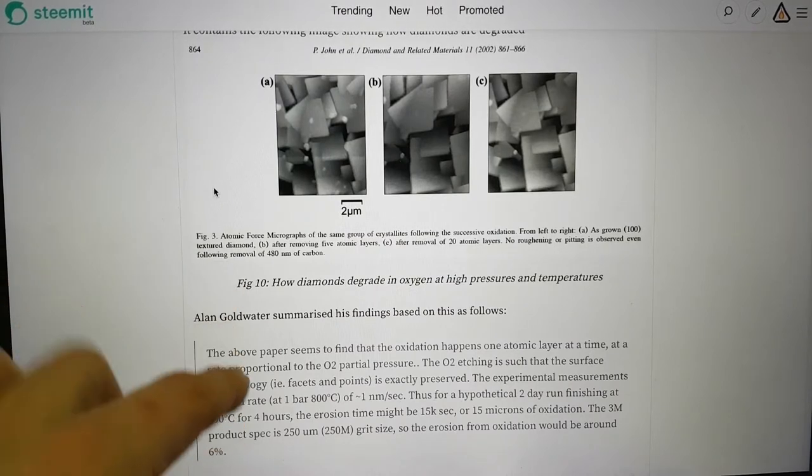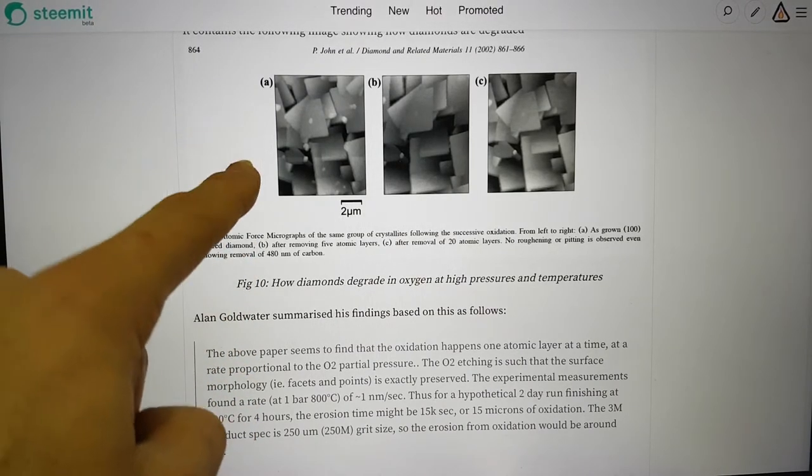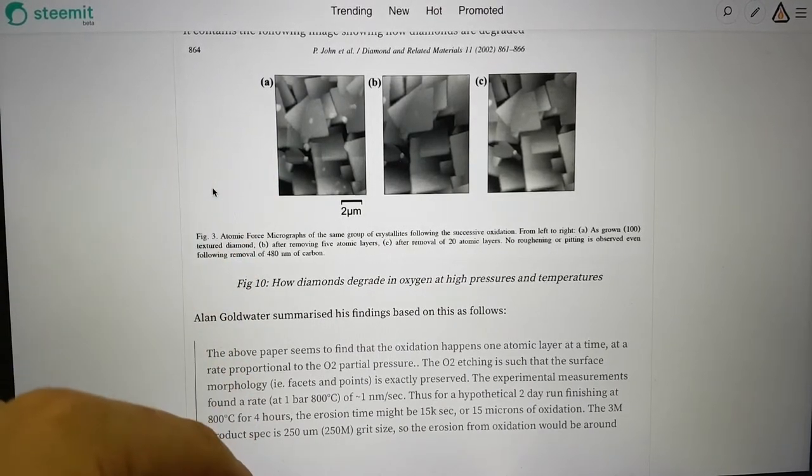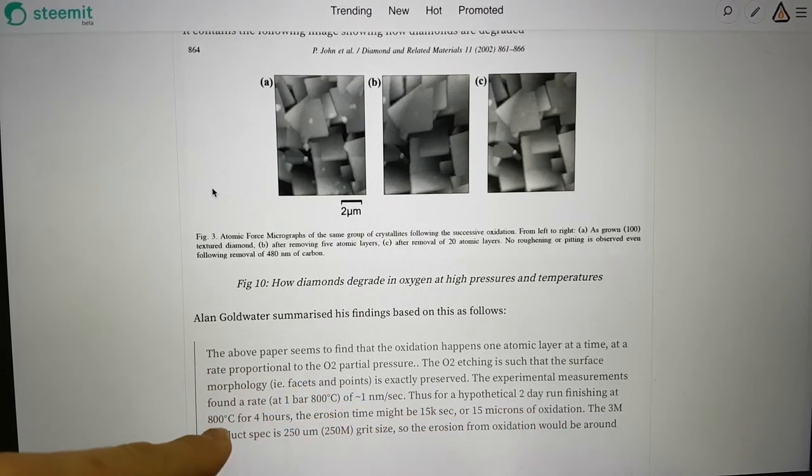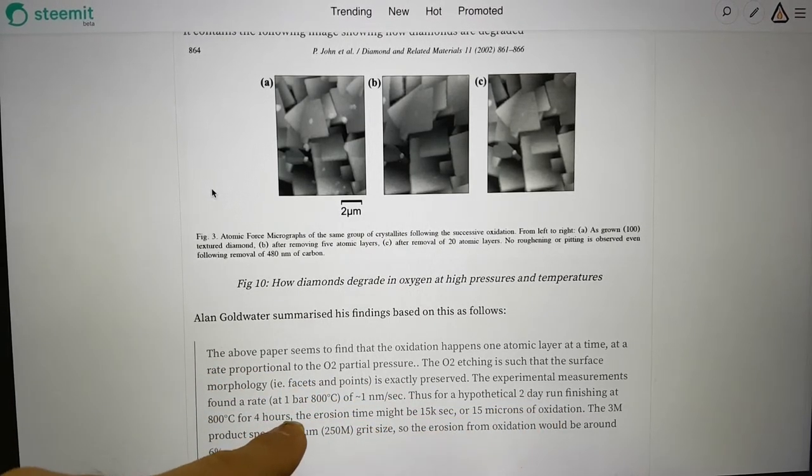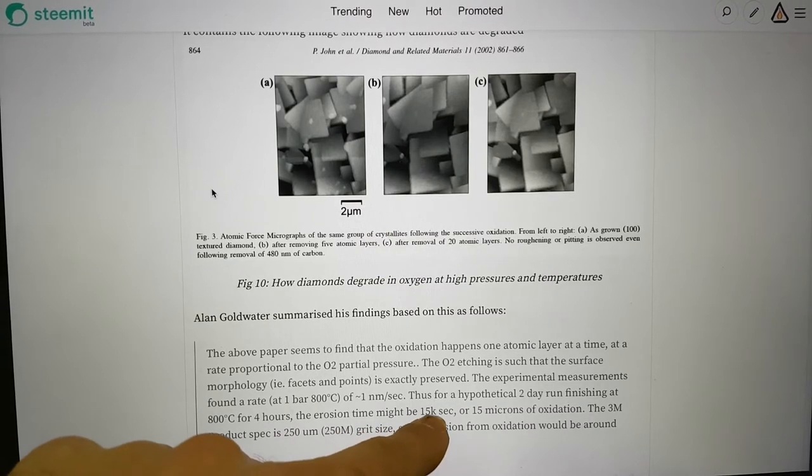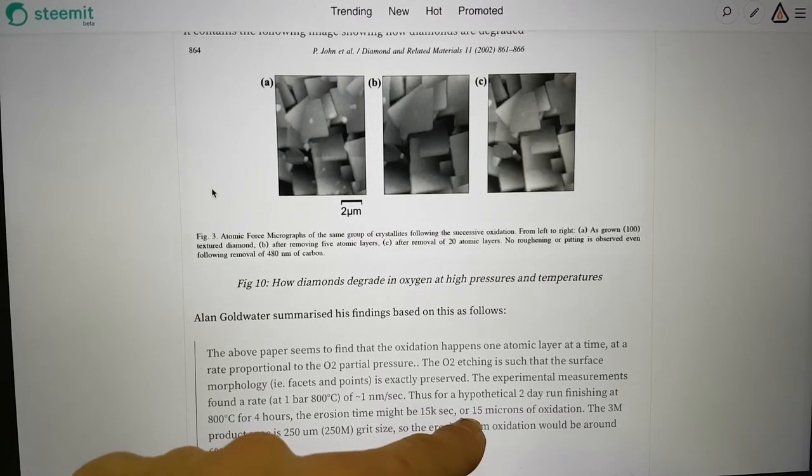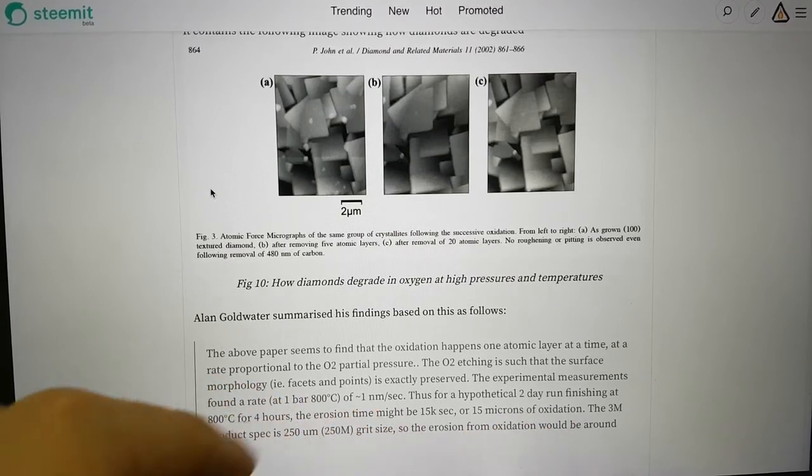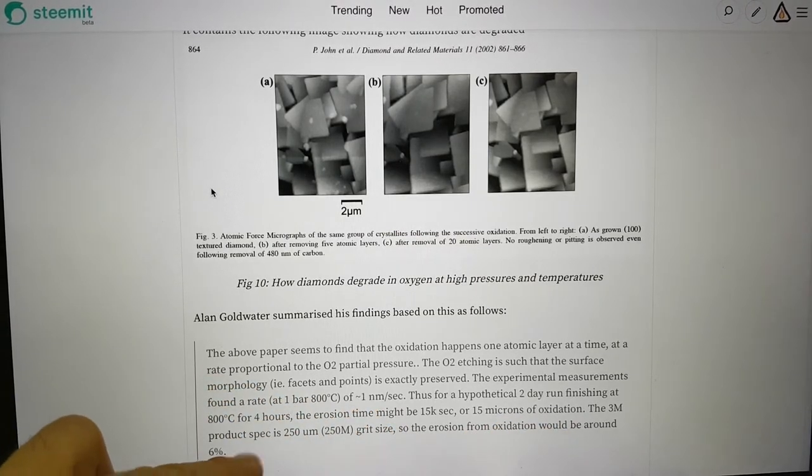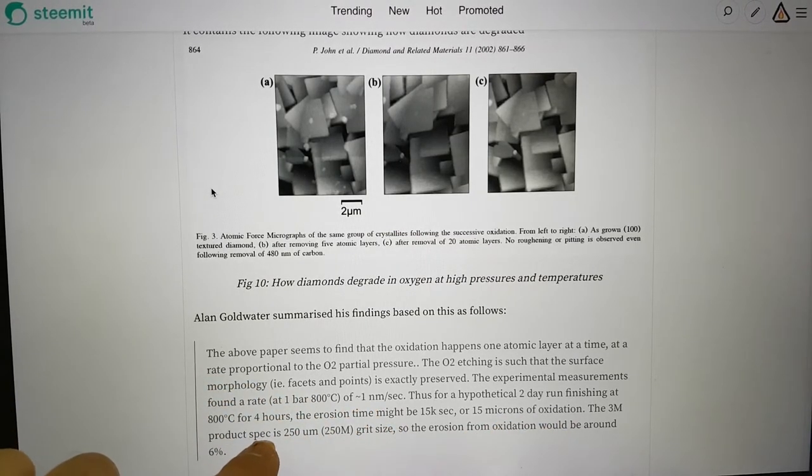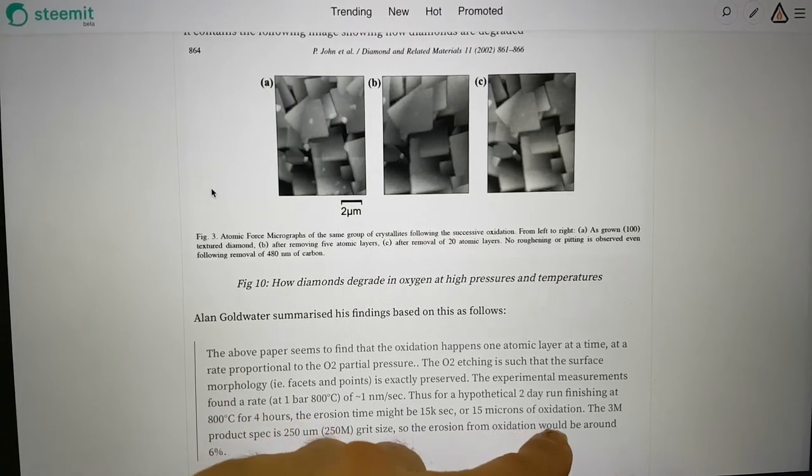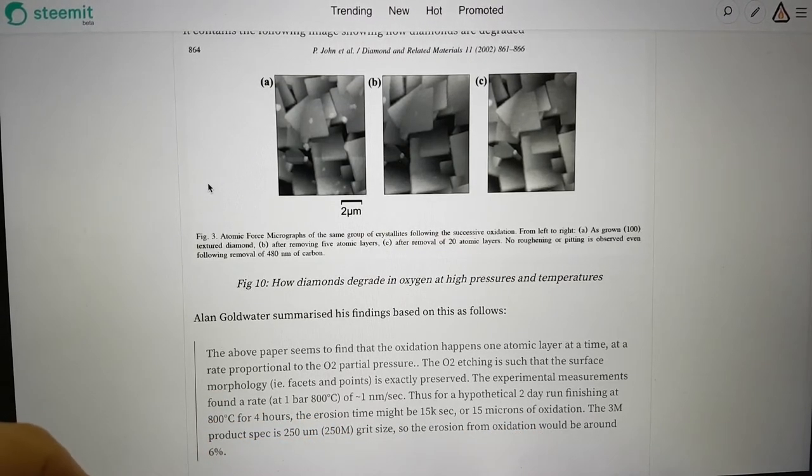Alan did some calculations based on the data in this paper. He found that for a two day run finishing at 800 degrees C for four hours, the erosion time might be 15,000 seconds and this would be 15 microns of oxidation. Based on the 3M diapad product spec, the diamonds are 250 microns, so he calculated the erosion from oxidation would be around 6%.